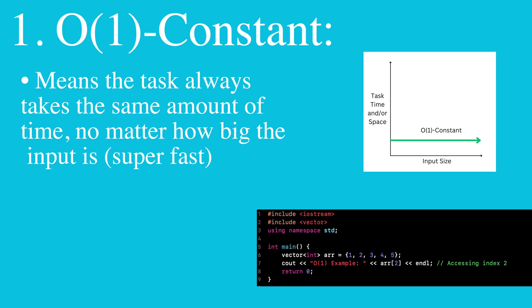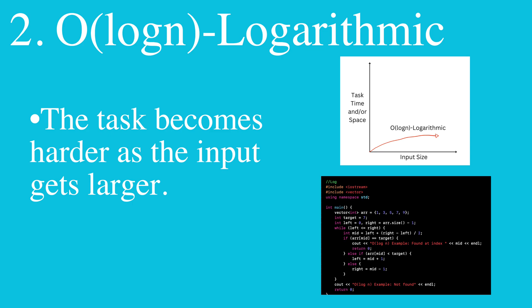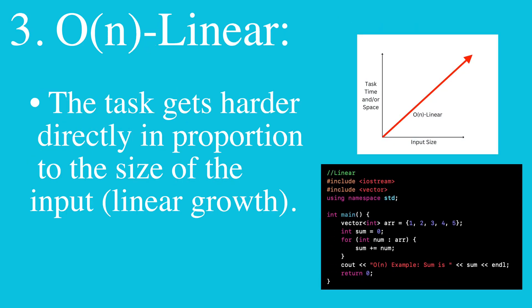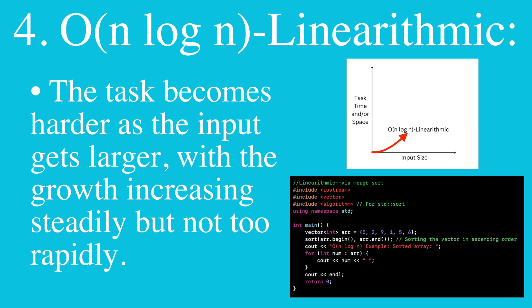This is big O notation with its different levels. O(1) constant means the task always takes the same amount of time no matter how big the input gets. Logarithmic means the task becomes harder as the input gets larger. Linear means the task gets harder directly in proportion to the size of the input. Linear arithmetic means the task becomes harder as the input gets larger, but the growth increases steadily, not too rapidly.